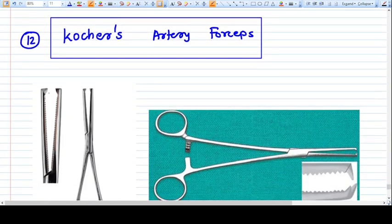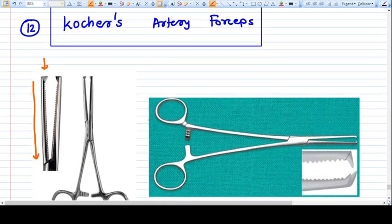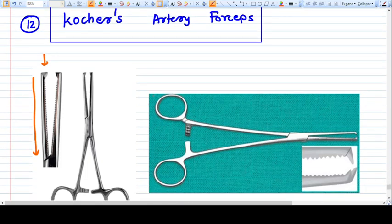In this instrument, you can see there are long blades with serration inside - they will be opposing to each other firmly - and also at the tip there are three teeth. So Cocher's forceps is a very good forceps. It will hold everything tight and it will not slip. Cocher's forceps is a combined design of Alice forceps and hemostatic forceps.